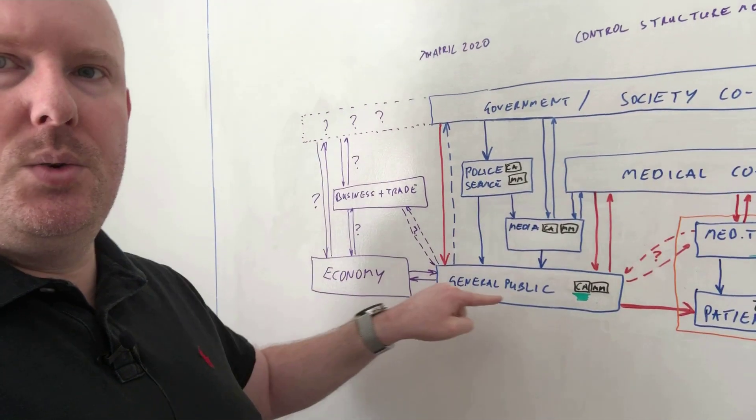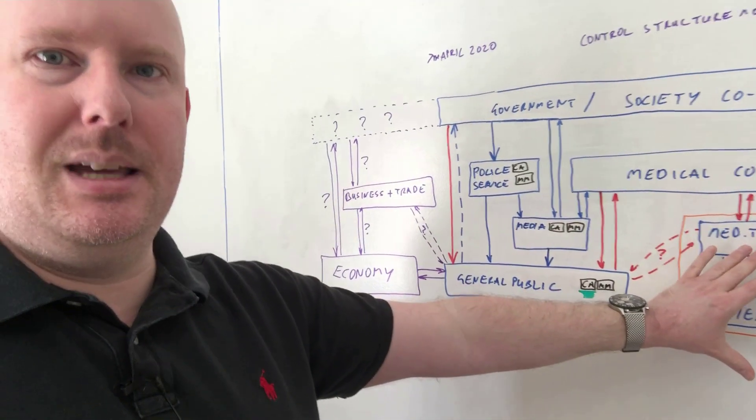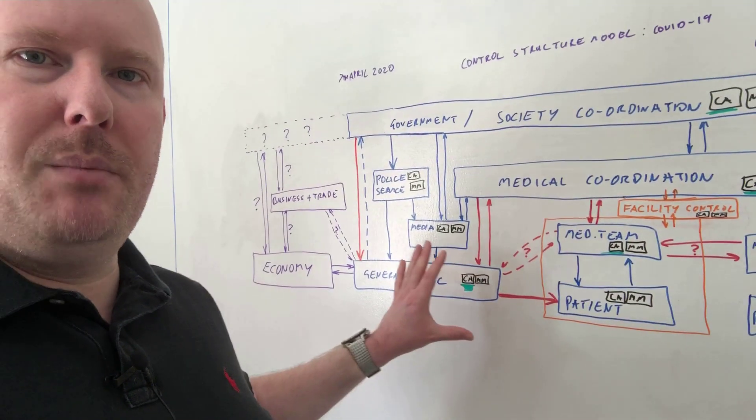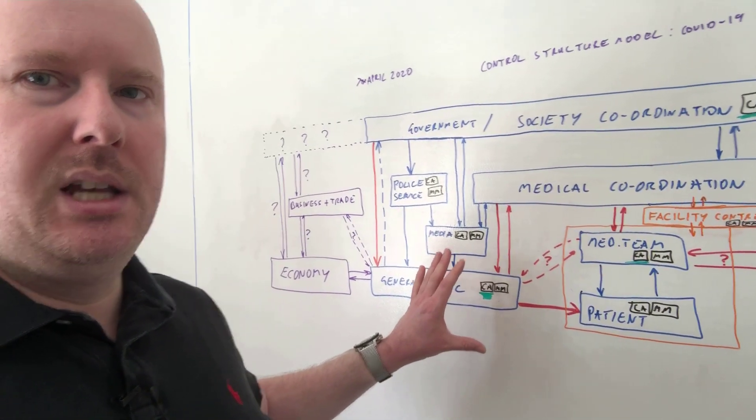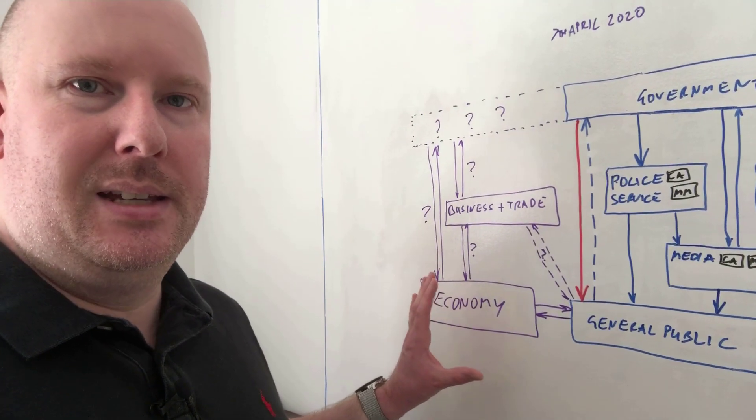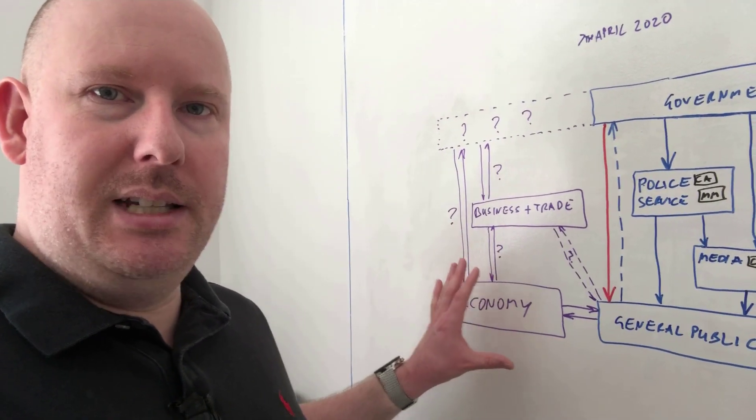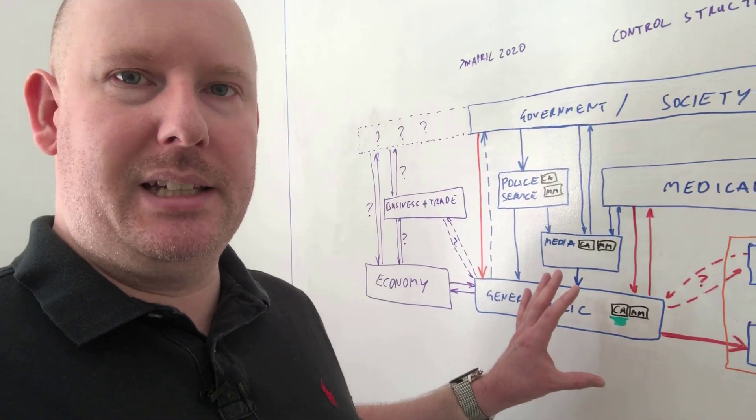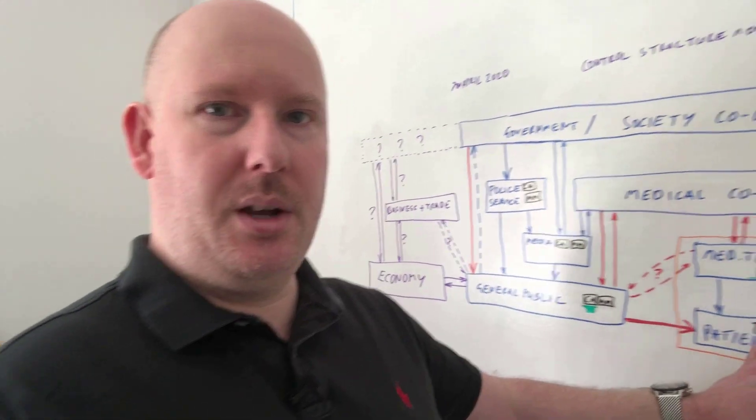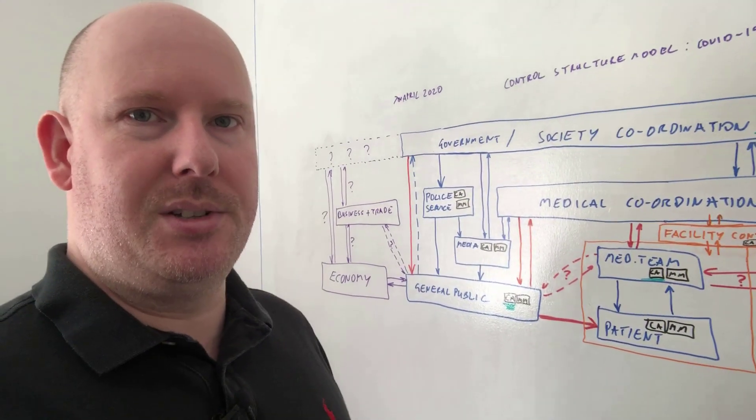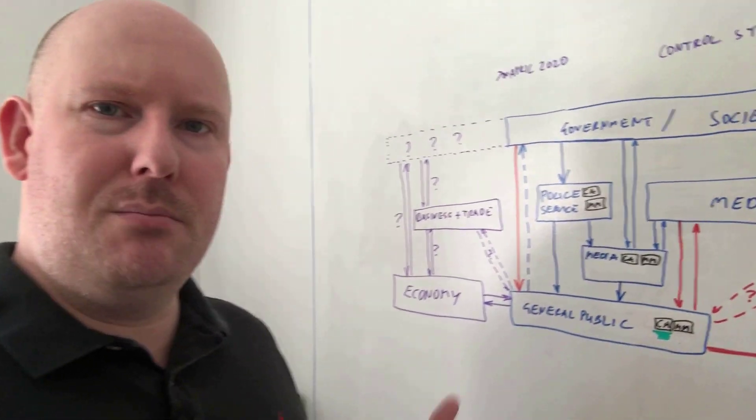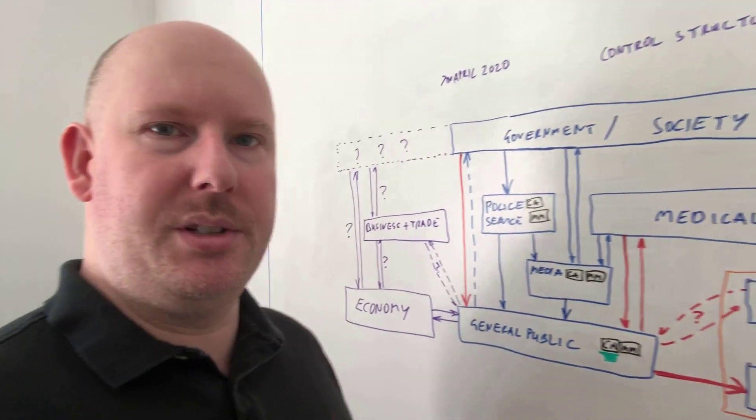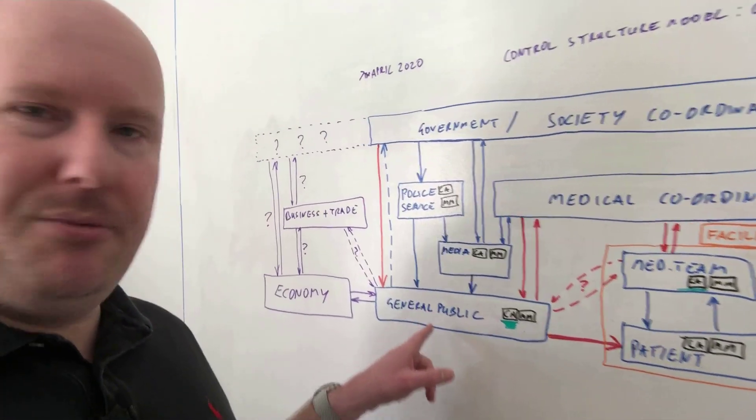So in terms of the control algorithm of those in charge and the mental model of it, how and when are they going to make decisions about what to do to not only minimize the impact on the health system, minimize the number of deaths that's going to happen, but also manage the economy? Because clearly destroying the economy is going to have a lot of effects on the general public, perhaps even more so than the number of deaths due to the virus.